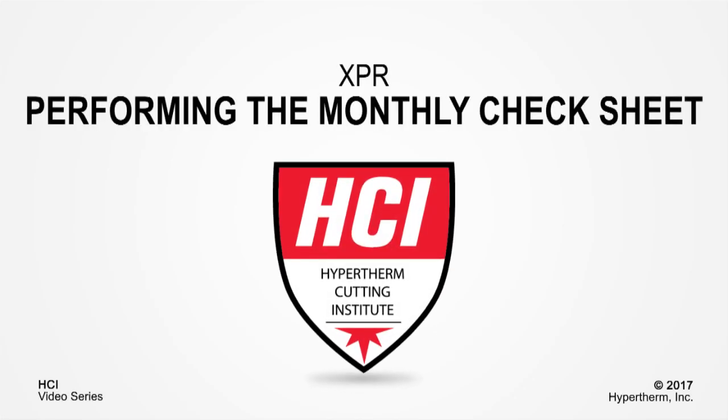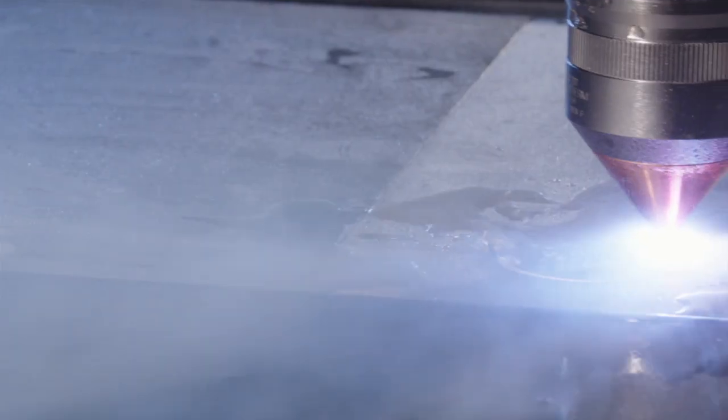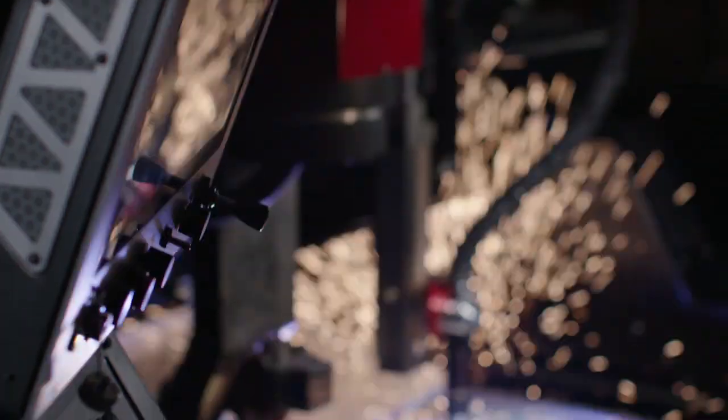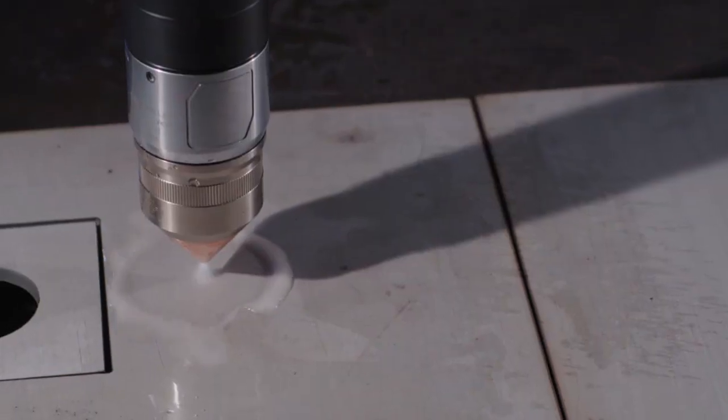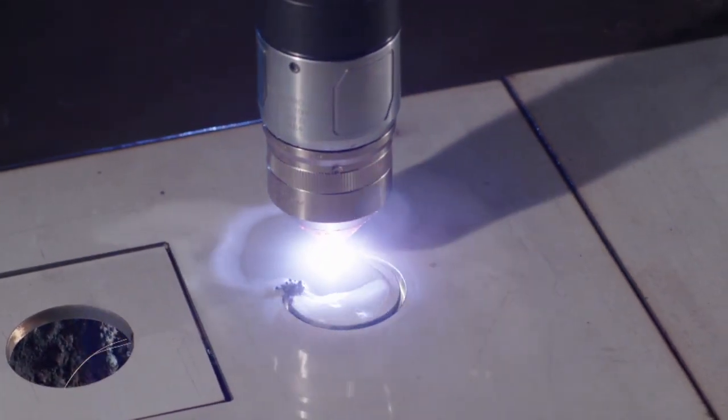Welcome to the Hypertherm Cutting Institute video, XPR Monthly Check Sheet. This short video will cover the steps that need to be taken to complete the XPR Monthly Check Sheet. By performing the monthly checks, you can be sure to find small problems before they impact production. These checks also help to ensure good cut quality and longer problem-free operation.